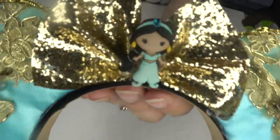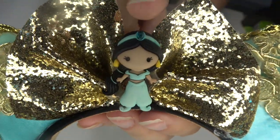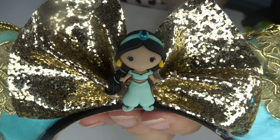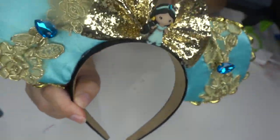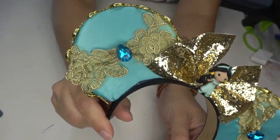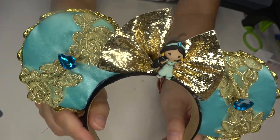The last detail of these Jasmine ears is that I picked up this little button from Joann's. It came in a whole pack of Aladdin style buttons that matched. There was like Genie, Aladdin, Jasmine. And I thought she was really cute glued in the center there for my daughter.